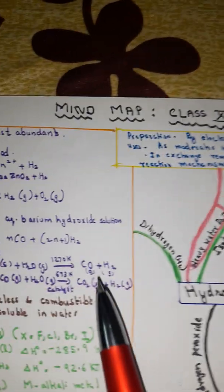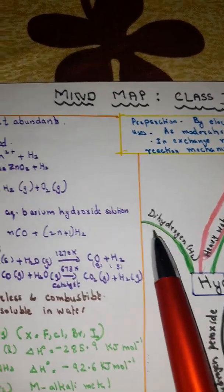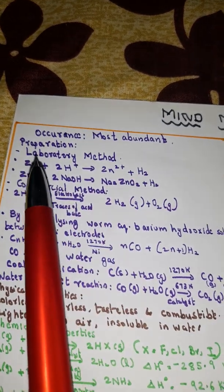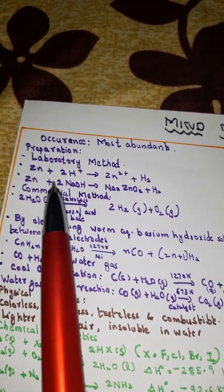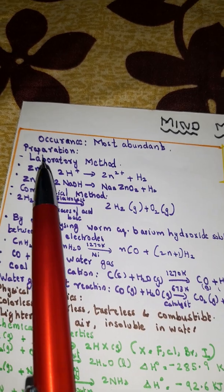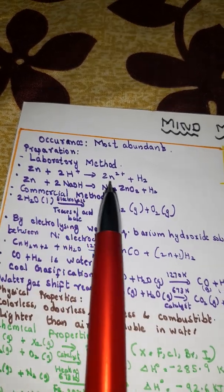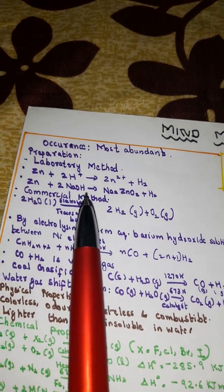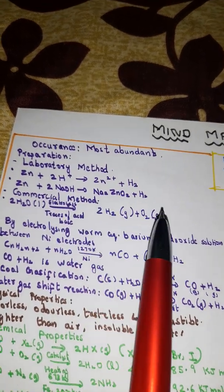Now here we can see dihydrogen H2. Occurrence: most abundant. How they are prepared - two methods. Laboratory method: Zn + 2H⁺ gives Zn²⁺ + H2. Then Zn + 2NaOH gives Na2ZnO2 + H2.